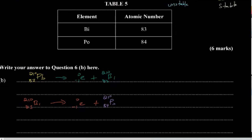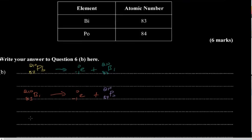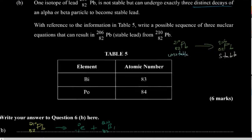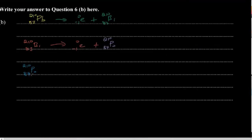Then polonium undergoes alpha decay. Our objective is to form stable lead. Stable lead is 82, 206. With alpha decay, the atomic number reduces by 2 and the mass number reduces by 4.